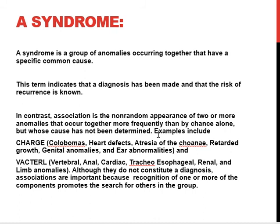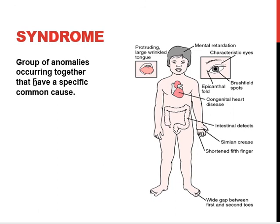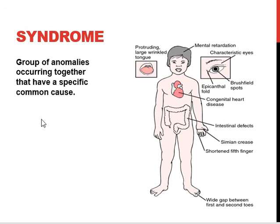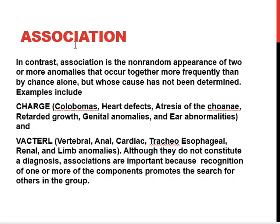A syndrome is a group of anomalies occurring together that have a specific common cause. This term indicates that a diagnosis has been made and the risk of recurrence is known. For example, Down syndrome presents with a protruding large tongue, mental retardation, congenital heart disease, characteristic eyes, intestinal defects, simian crease, and shortened fifth finger — a group of anomalies with a common cause.